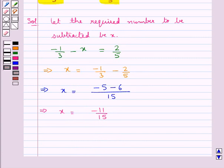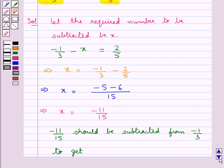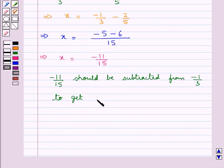Thus we say -11/15 should be subtracted from -1/3 to get 2/5. Thus our final answer is -11/15.